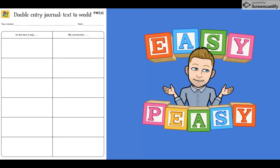So, what does your follow-up activity look like? It's a double-entry journal. Up the top, you need to write your name, the name of the text you're reading, and the date. When you're reading and a text-to-world connection pops into your head, you need to write down exactly what it said in the text on the left-hand side — there's even a title for you: 'In the text it says.' So you write down the passage or part of the text you had a connection with on the left-hand side. On the right-hand side, you write the connection you had — what it reminded you of, or the link you made with it.